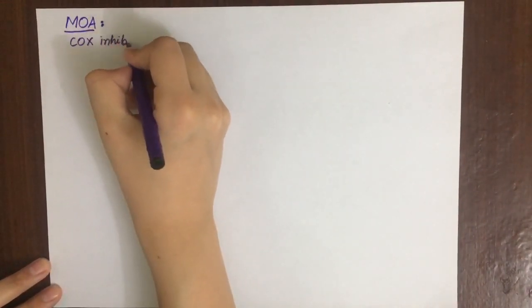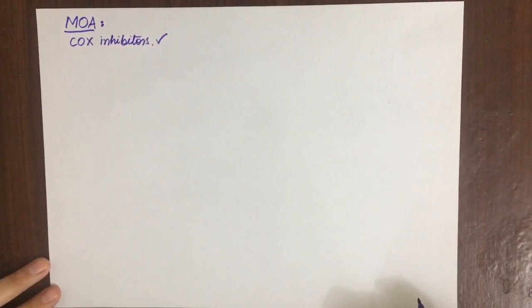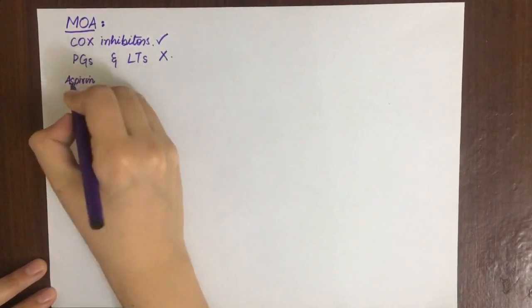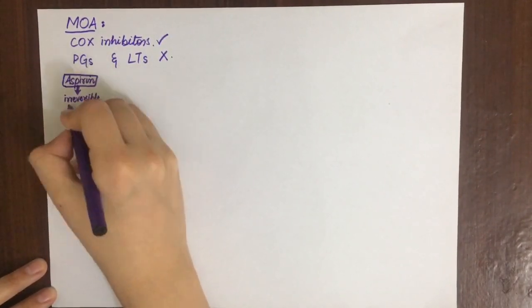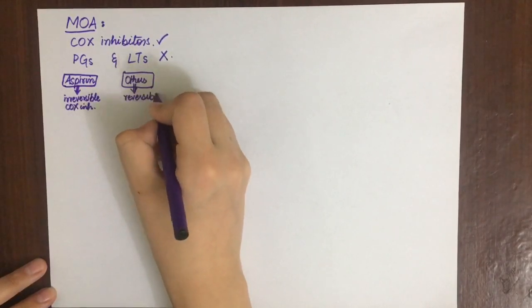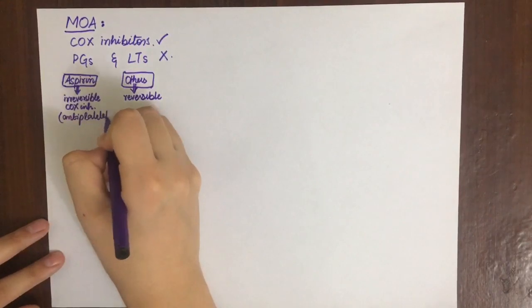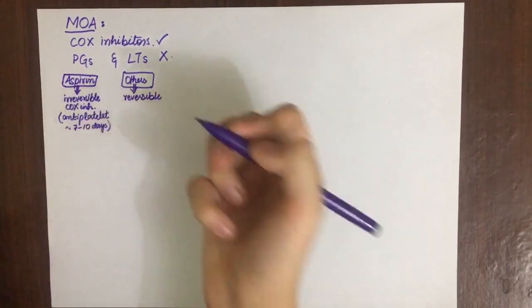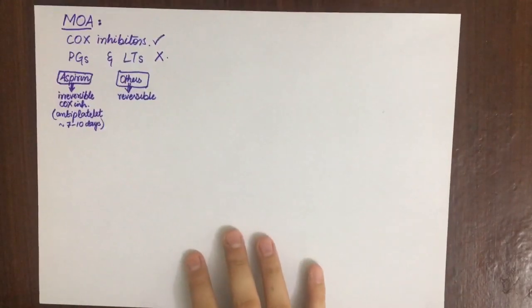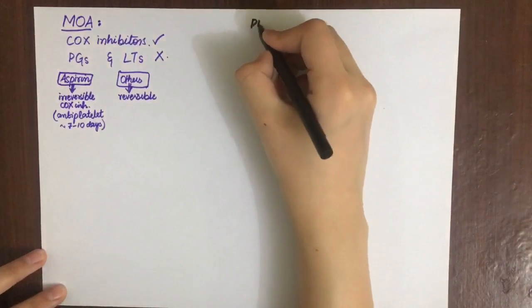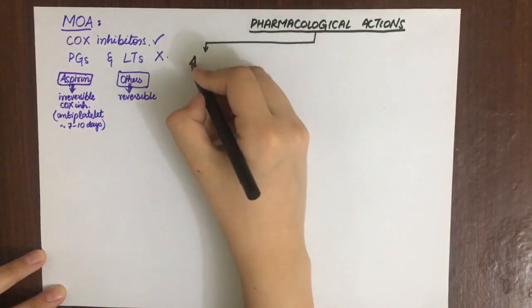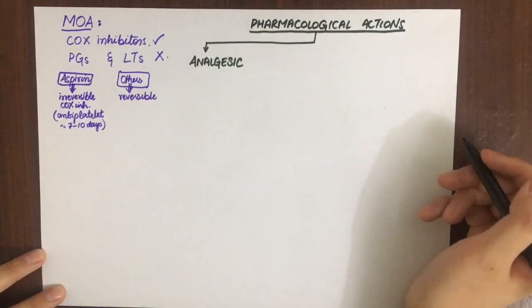The mechanism of action of NSAIDs involves two types of Cox enzymes — Cox-1 and Cox-2. NSAIDs inhibit both, or selectively inhibit Cox-2, which is inducible in inflammation, thereby preventing the formation of prostaglandins and leukotrienes. This produces anti-inflammatory, analgesic, antiplatelet, and antipyretic effects. Aspirin is an irreversible Cox inhibitor while others are reversible, which is why aspirin can be used as an antiplatelet — it permanently inhibits Cox enzymes in platelets for their 7–10 day lifespan.